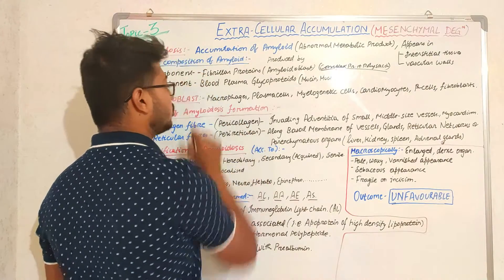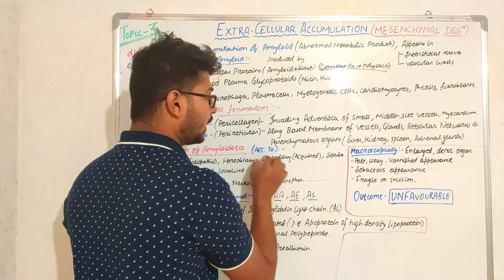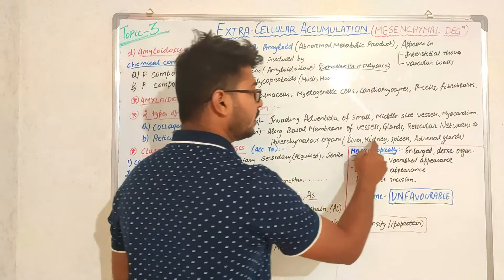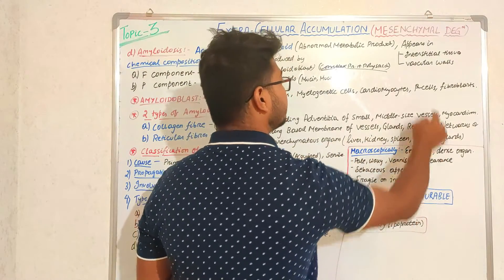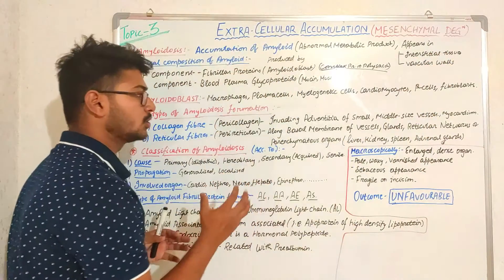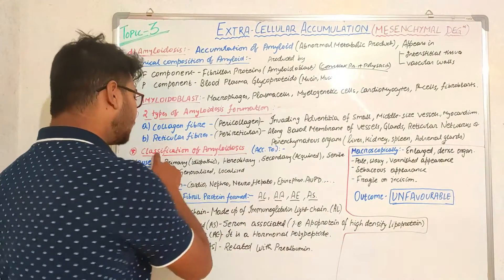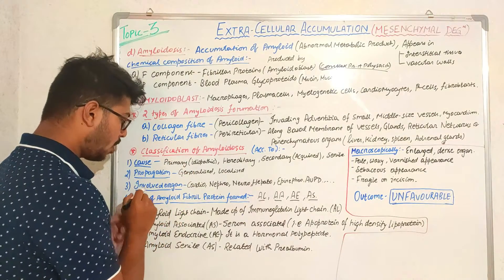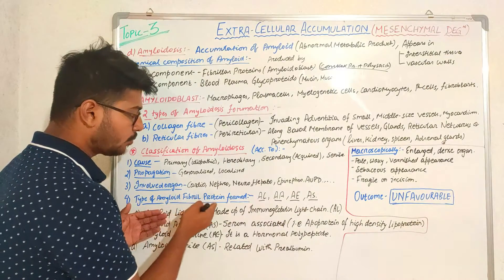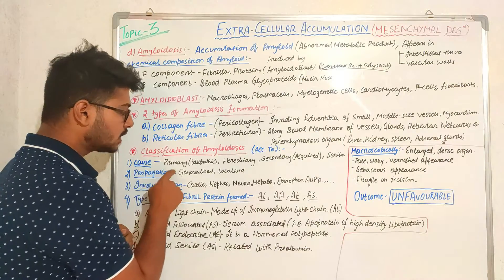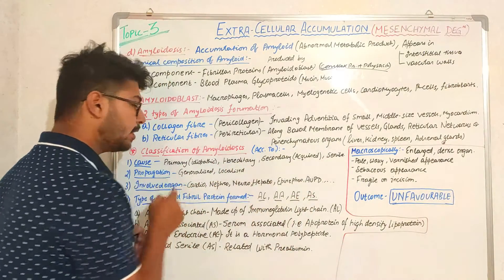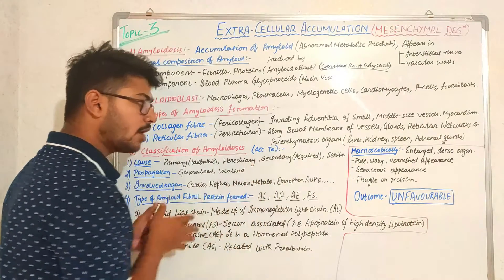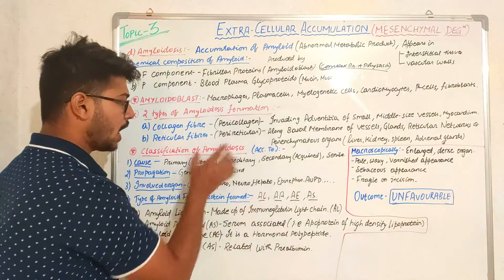In perireticular amyloidosis, amyloid accumulates along the basal membrane of vessels and glands and the reticular networks of parenchymatous organs like liver, kidney, spleen, and adrenal glands. Amyloidosis can be classified according to cause, propagation, organ involved, and type of amyloid fibril protein. According to cause: primary (idiopathic), hereditary, secondary (acquired), and senile — the final stage of amyloidosis.